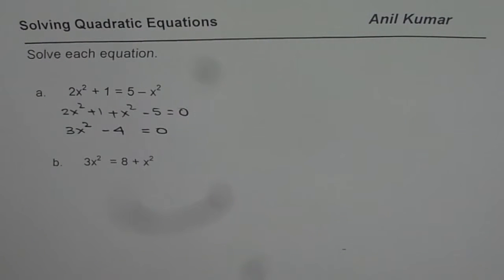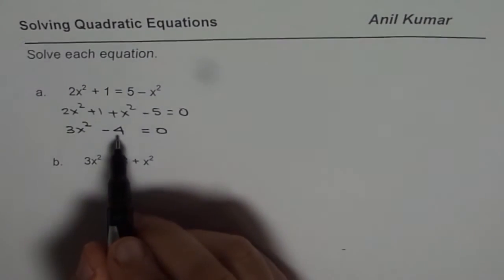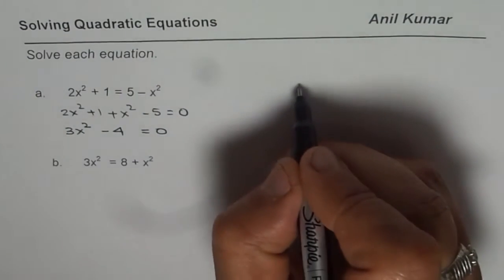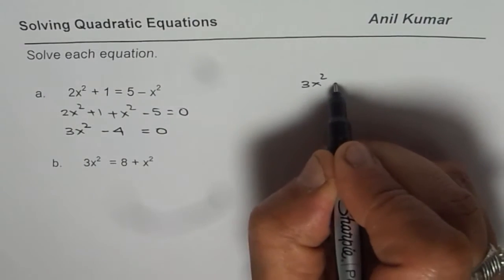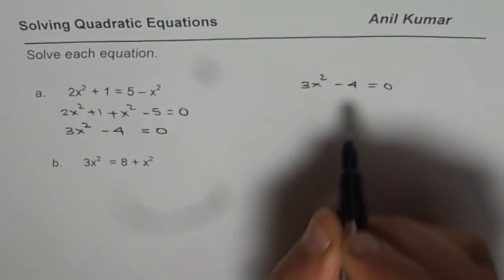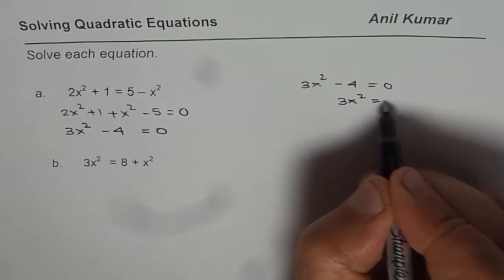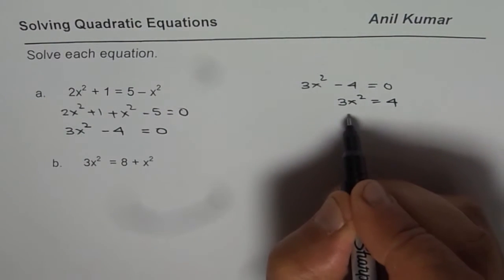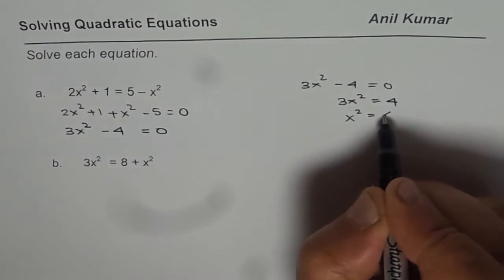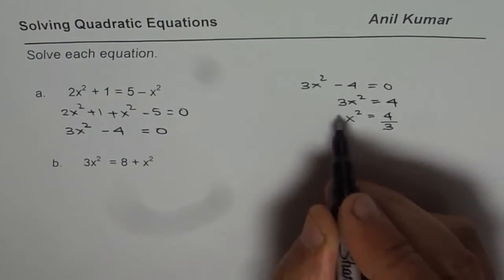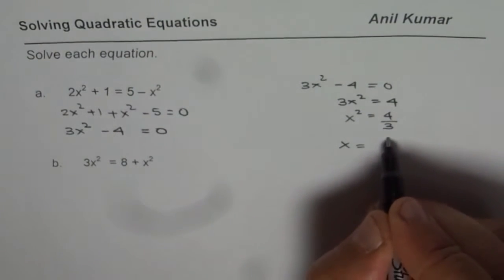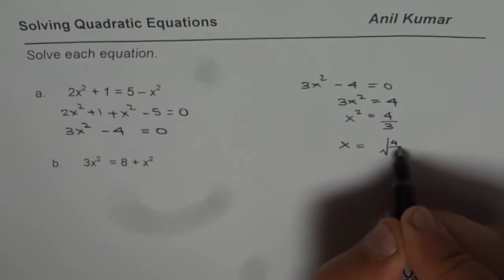And now, we will solve it. To solve this equation, we have the equation 3x squared minus 4 equals to 0. We can take 4 to the other side. So, we have 3x squared equals to 4. So, we have x squared equals to 4 divided by 3 and the square root. So, we have x equals to square root of 4 over 3.